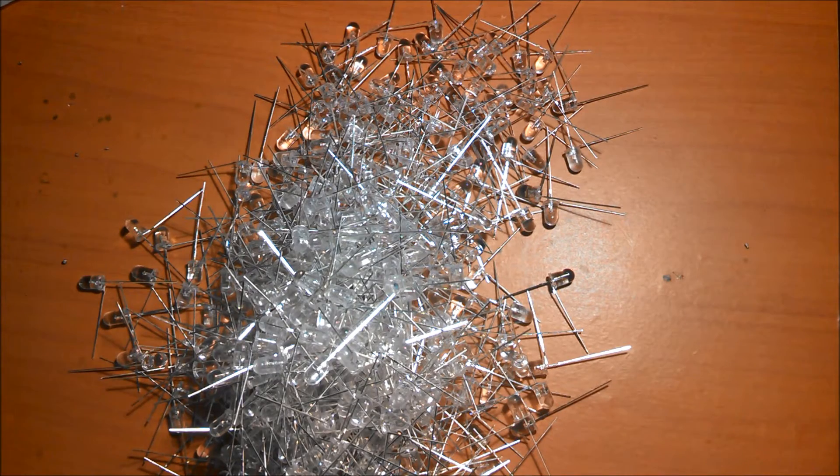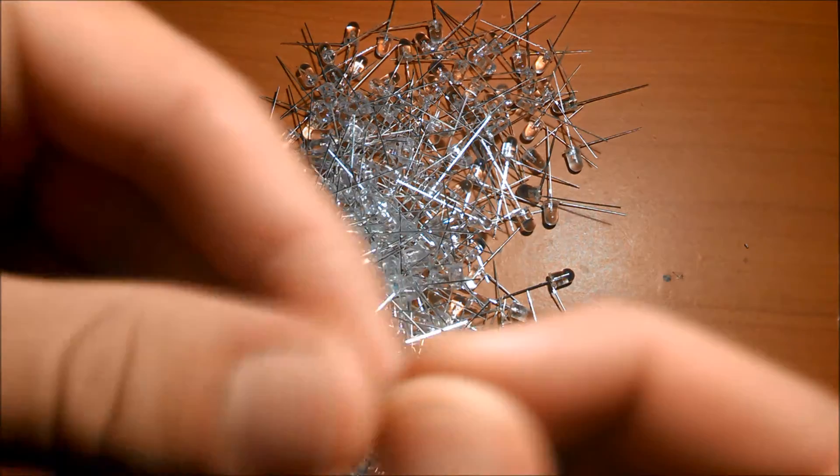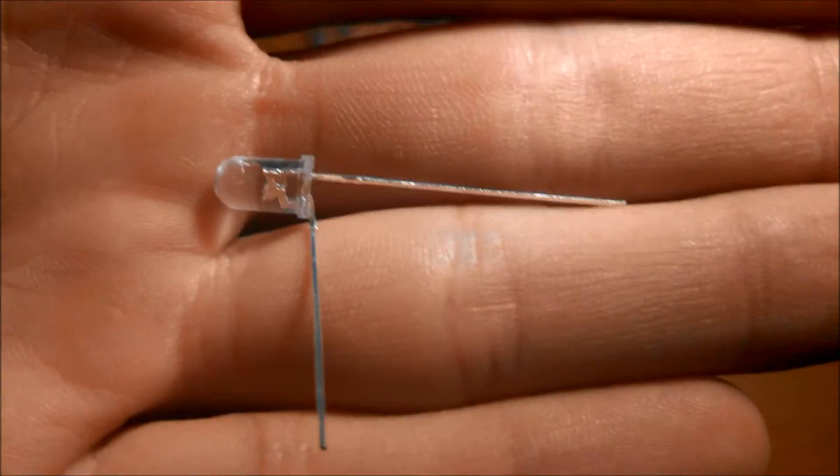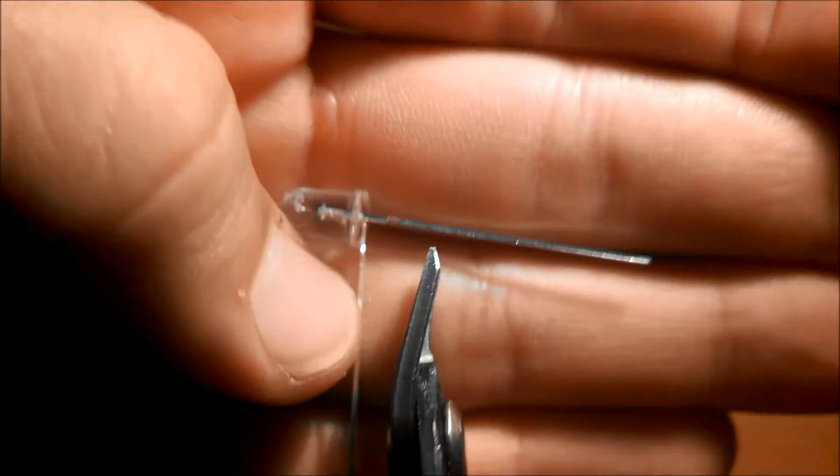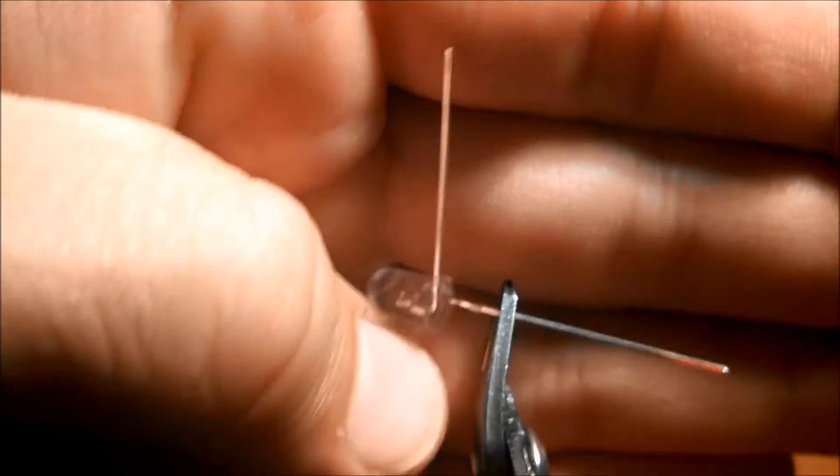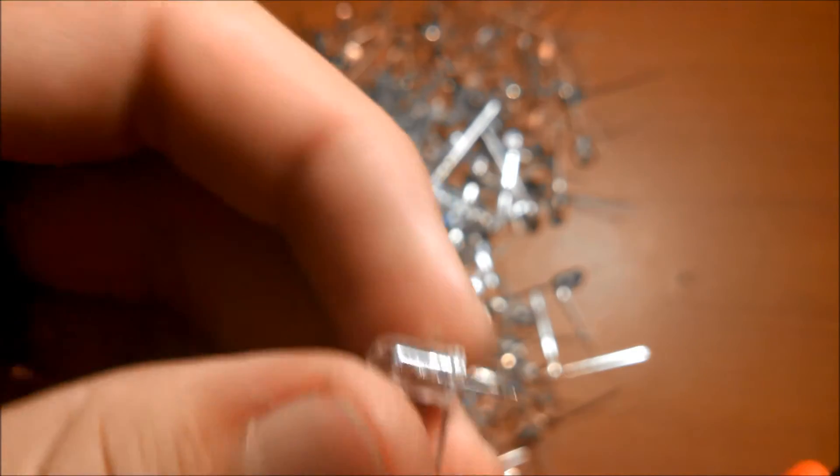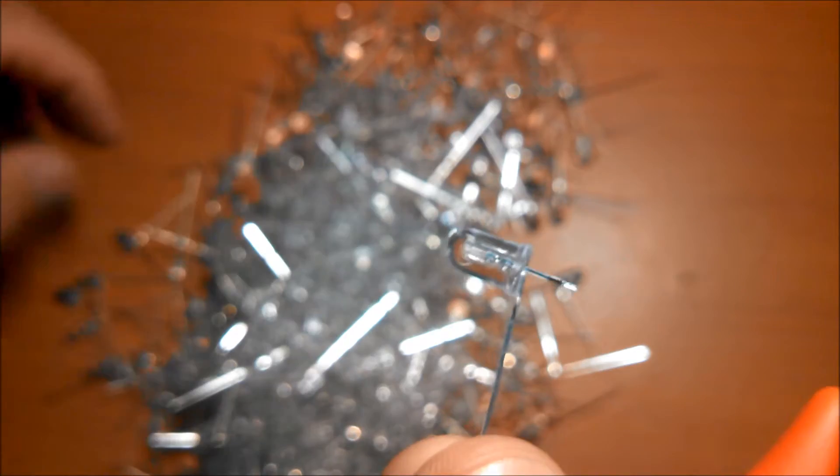So once you've completed bending all the LEDs you'll need to trim them down to size. Leave about a quarter inch here on the lead that hasn't been bent which was the longer leg.